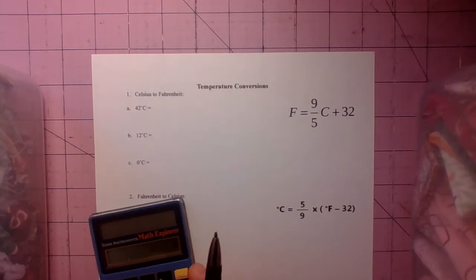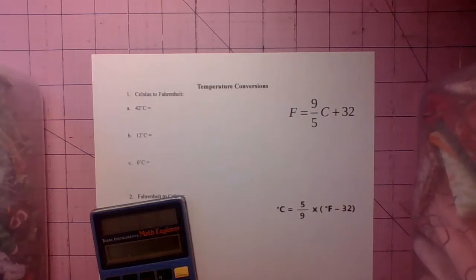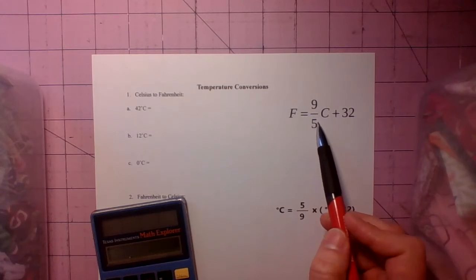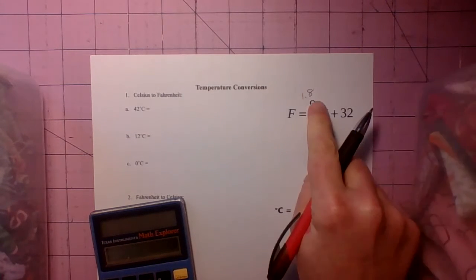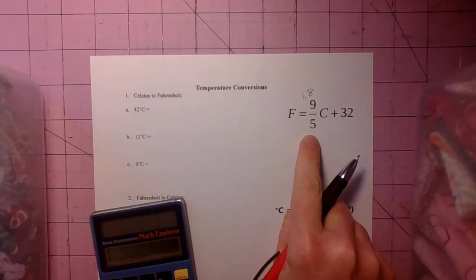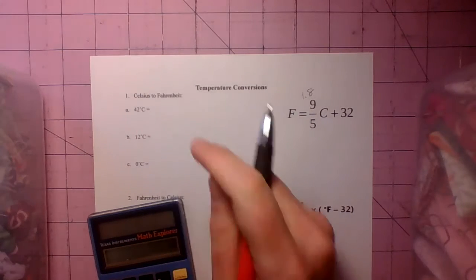Now a quick easy way to do this is to figure out what this fraction means. So make sure you have a calculator. So 9 divided by 5 that is 1.8. So whenever you use this formula just plug in 1.8 instead of 9 over 5 and it makes it a little easier because the first thing you do is multiply what this fraction means by your number you're trying to convert.